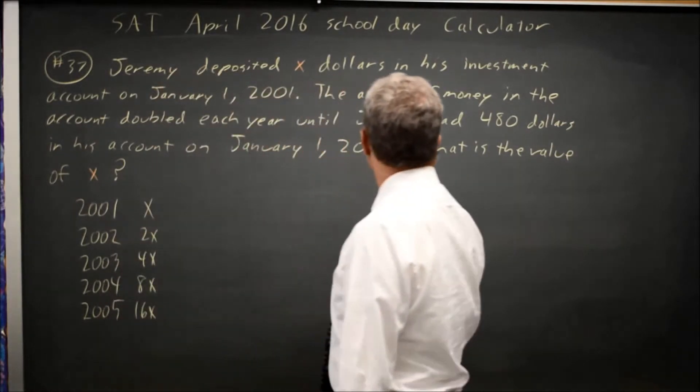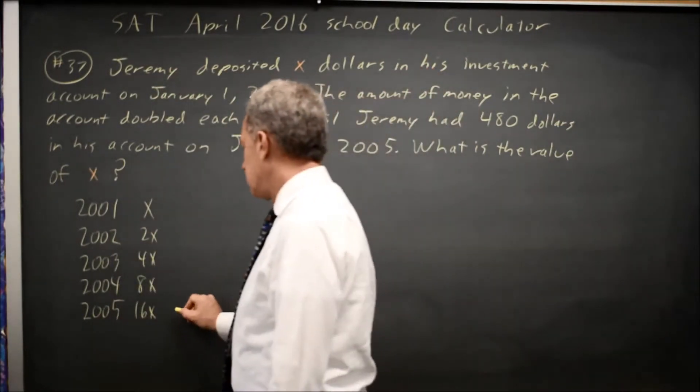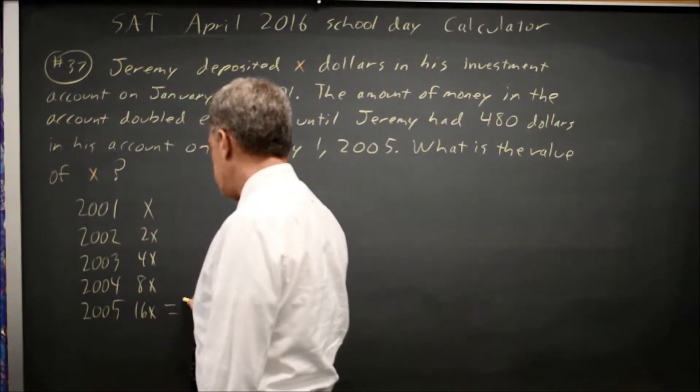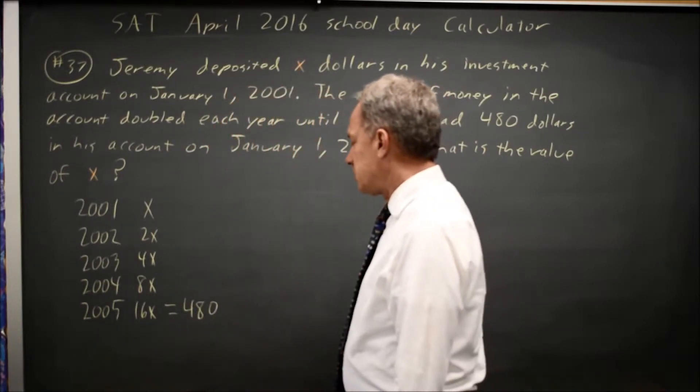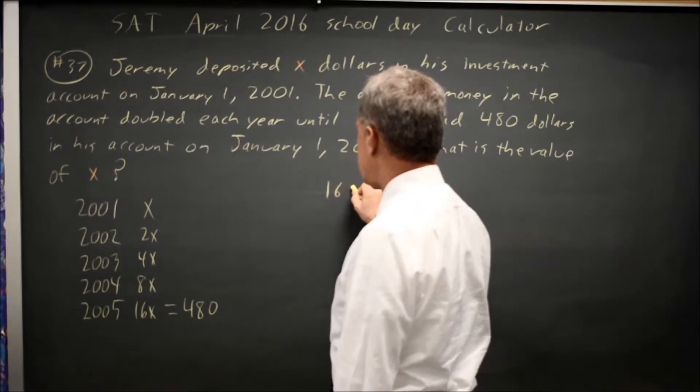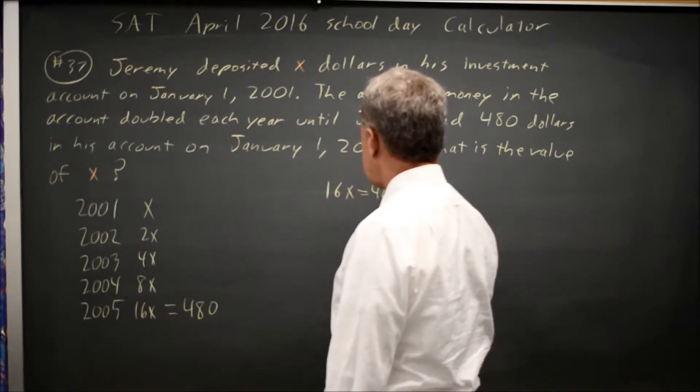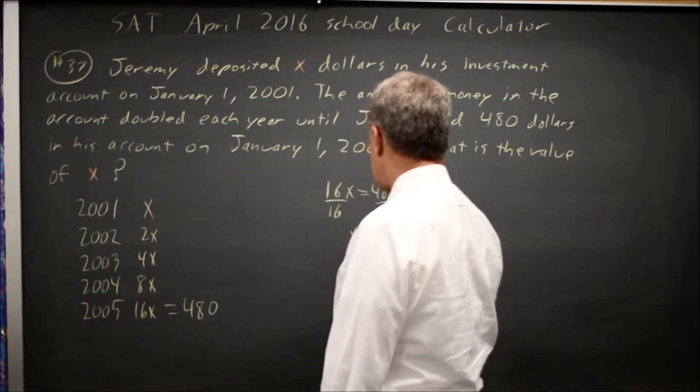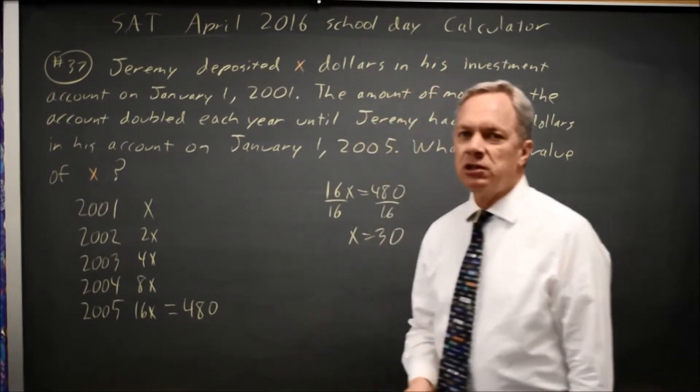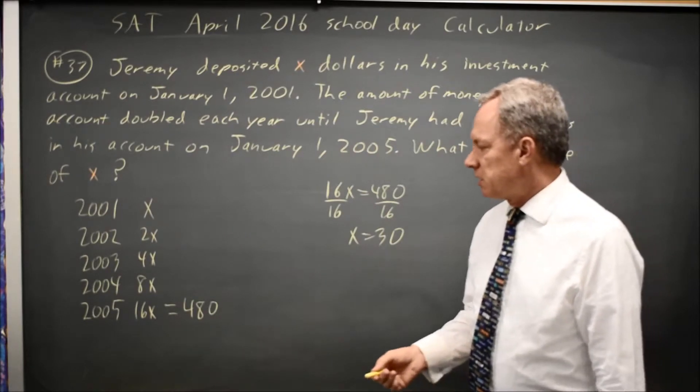They also tell us that it's 480 dollars in 2005. I could algebraically solve this for X. If 16X equals 480, divide both sides by 16 and X equals 30. That's easy to do on the calculator if not in your head.